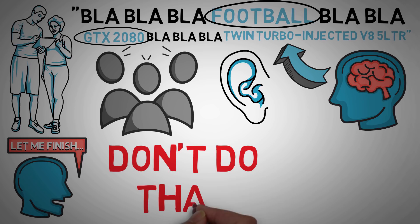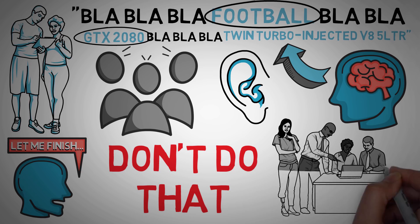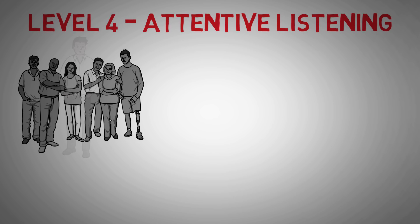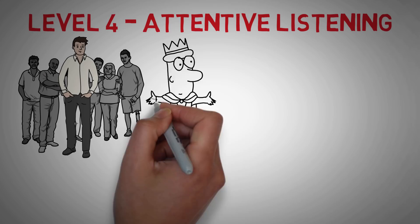People can pick up on selective listening even more than they can on pretend listening. But let's keep moving up this pyramid. Level four is attentive listening, and this is what the majority of people do. Now many people actually can't make it past this stage, and if you can, you'll stand out and you will be remembered. In fact, one study found that cult leaders are actually great at getting past this to level five, as well as other generally charismatic people.